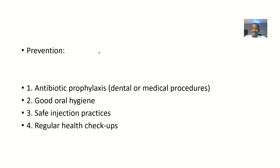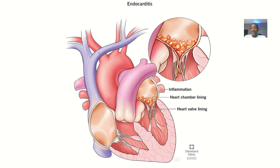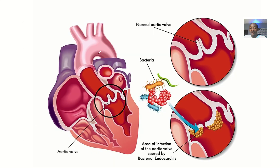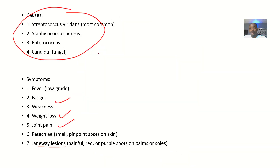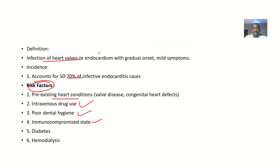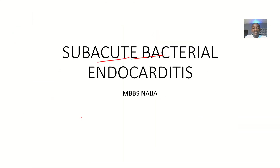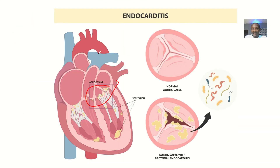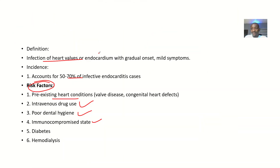Prevention strategies include antibiotic prophylaxis — taking antibiotics before procedures — maintaining good oral hygiene, safe injection practices, and regular health checkups. These are the key preventive measures for subacute bacterial endocarditis.